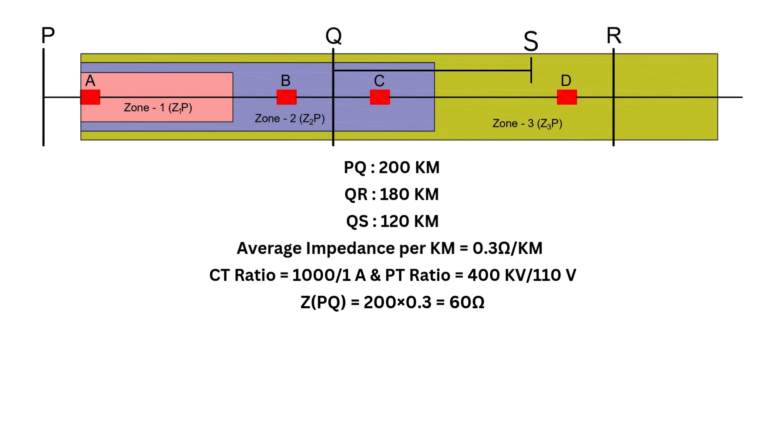For zone 2, we extend the protection to cover 120% of the line PQ, which is 1.2 × 60, which is 72 ohms. Adjusting for the CT-PT ratio, 72 × 0.28, which is 20.16 ohms. So, the zone 2 setting will be 20.16 ohms.